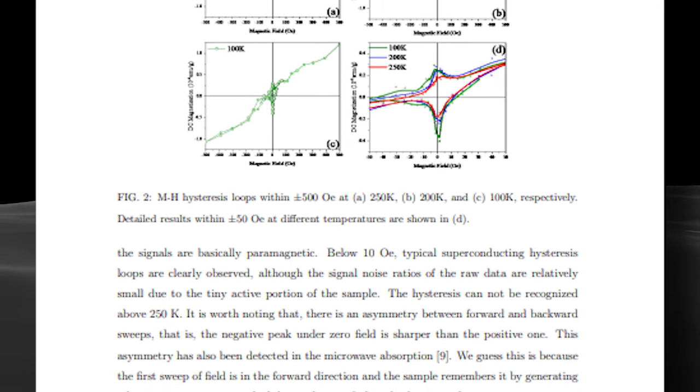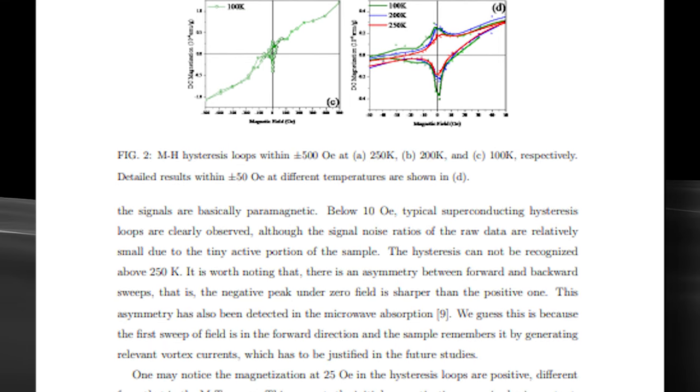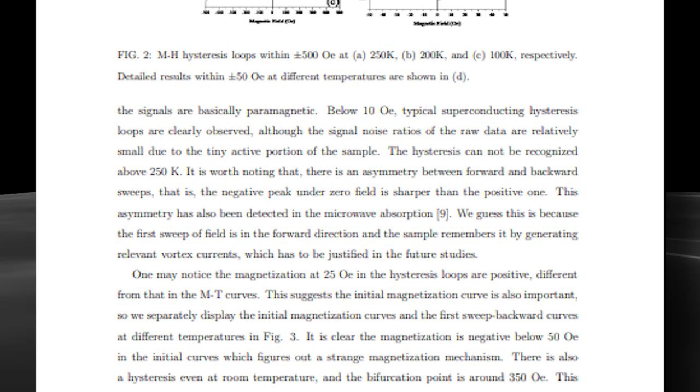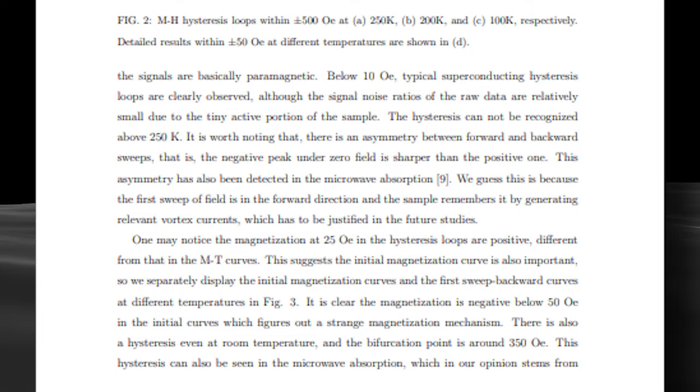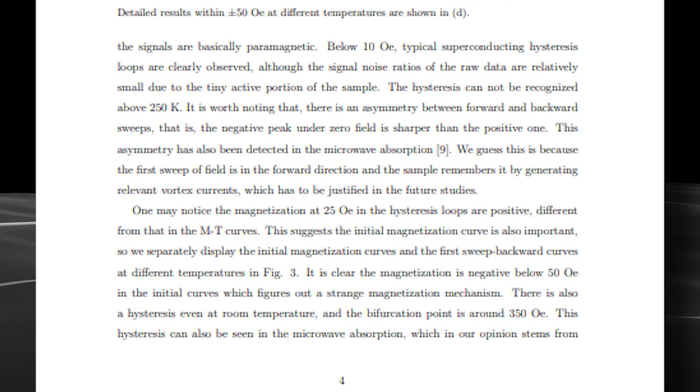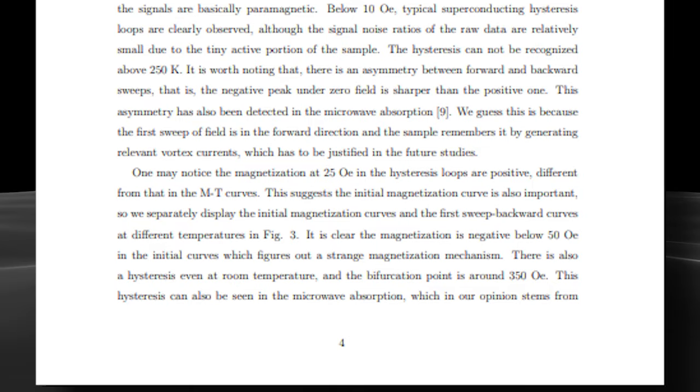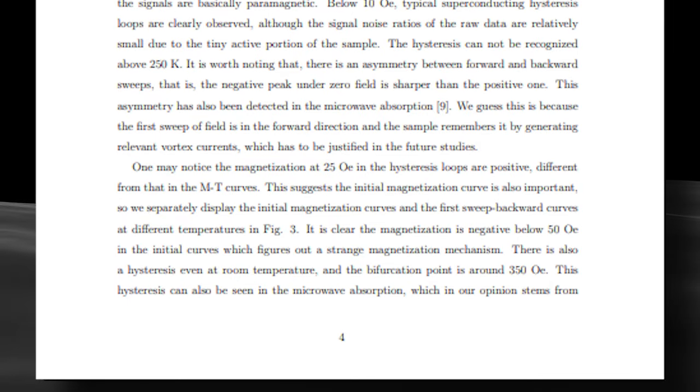Turns out, under a light magnetic field, the material said no thanks, magnetic field, diamagnetism. But when the magnetic field got a bit stronger, the material was like, alright, you're not so bad, paramagnetism. This switch happened at a specific strength, giving them insights into how the material handles magnets.